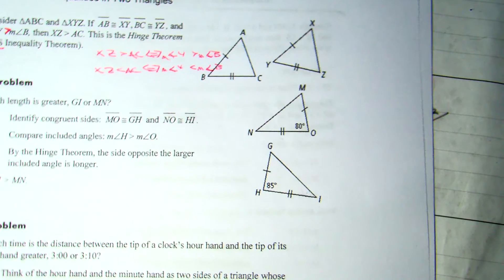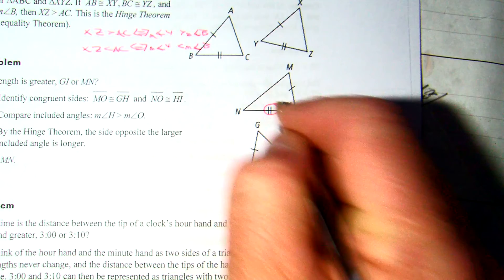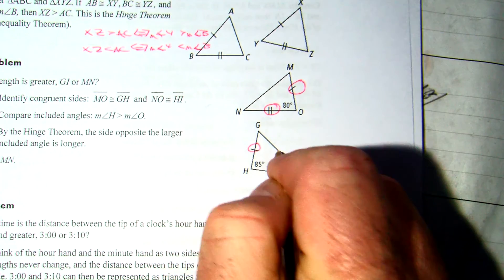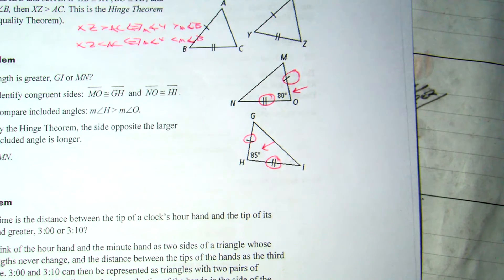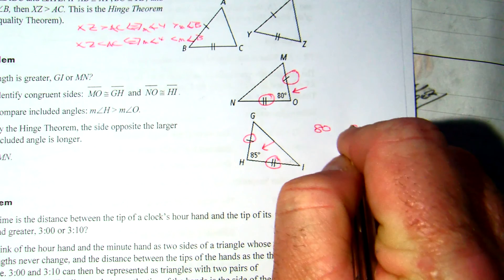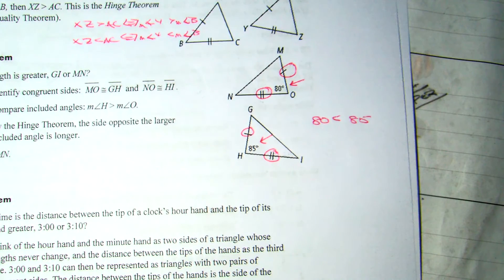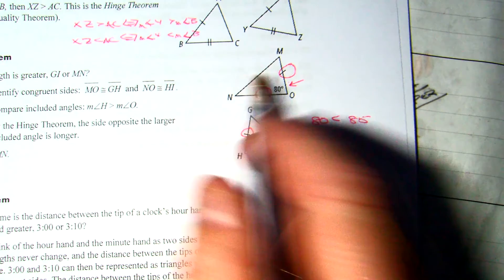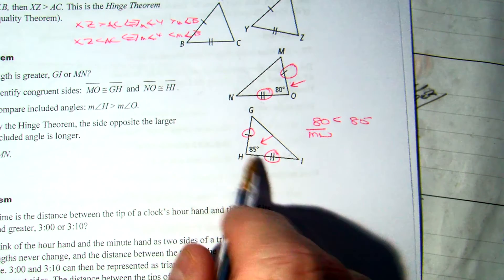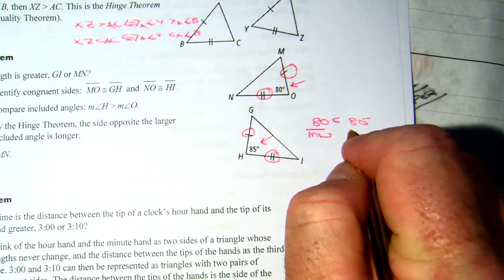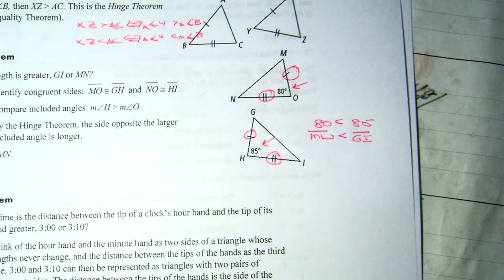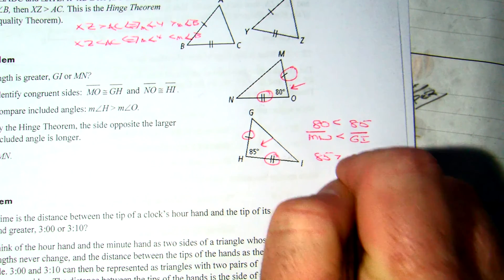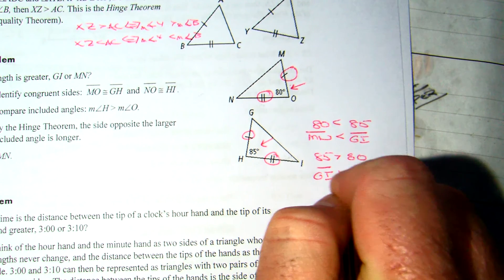If I come down here, I notice I got a pair of congruent sides. I got the included angle listed in both. So you take the two angles I give you and put them in either order. 80 and 85. 80 is less than 85. Opposite 80 is segment MN. Opposite the 85 is segment GI. So therefore, MN is less than GI. You could reverse them, certainly. You could say 85 is greater than 80. And then your inequality would be reversed. GI is greater than MN.